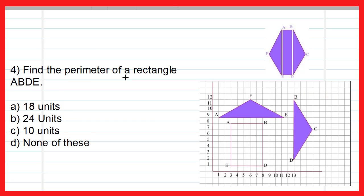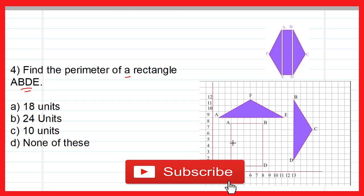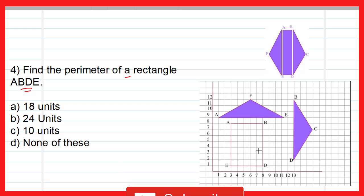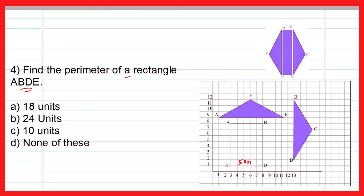Now find the perimeter of rectangle ABDE. The perimeter is the total boundary distance: AB + BD + DE + EA. To find the distance ED, point D is at a distance of 8 from the y-axis and point E is at a distance of 3 from the y-axis, so ED equals 8 minus 3, which is 5 units. Since ABDE is a rectangle, the opposite side is also 5 units.